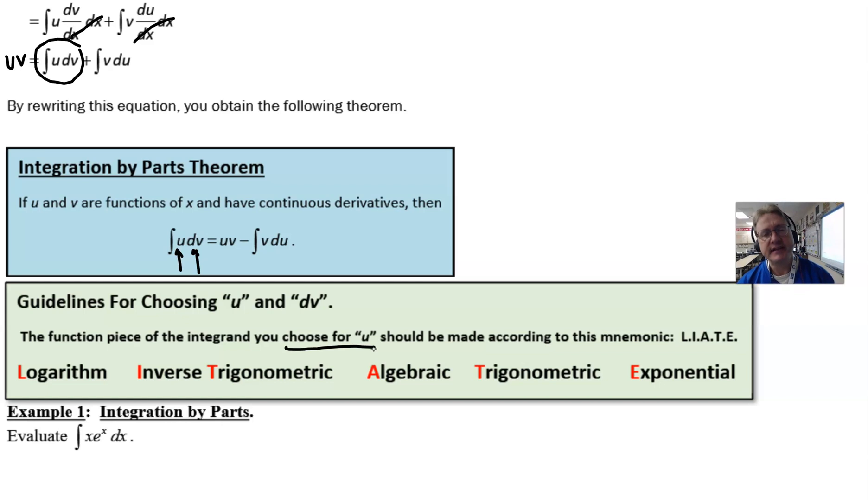So for example, if you see a logarithm expression in your integrand, you want to make that your u. If you don't see a logarithm, move to the next term, which is the inverse trig. That's the i in liate. And we see that there is no inverse trig in this expression either. So move to the third piece, algebraic. Now algebraic is defined as basically an x raised to a power typically. And we notice that we see that in this problem. We have this x to the first right here. So we have already seen what liate has dictated our u to be equivalent to. So let's go ahead and make that happen. I'm going to let u equal the x. And what that means is that the dv by default has to be the other part.